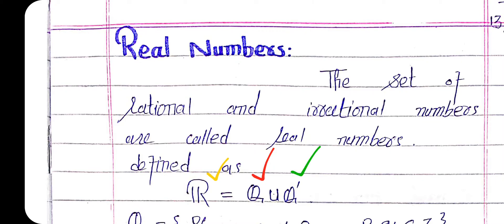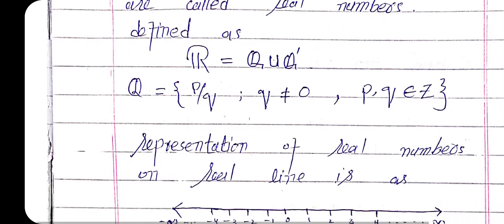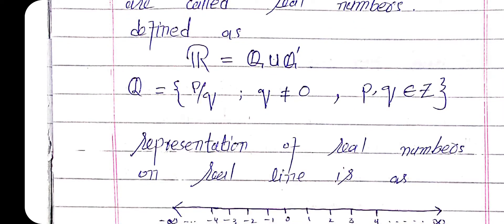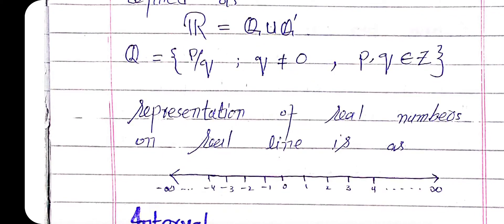The set of real numbers is the union of the set of rational and the set of irrational numbers. The set of rational numbers Q are those numbers which can be expressed in the form p/q, with the condition that both p and q belong to the set of integers and q is not equal to zero. We can represent the set of real numbers on the real line.